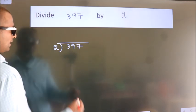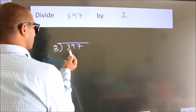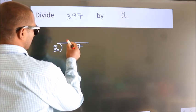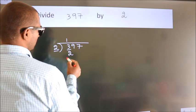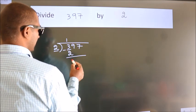Next. Here we have 3, here 2. A number close to 3 in 2 table is 2 times 1 is 2. Now, we should subtract. We get 1.